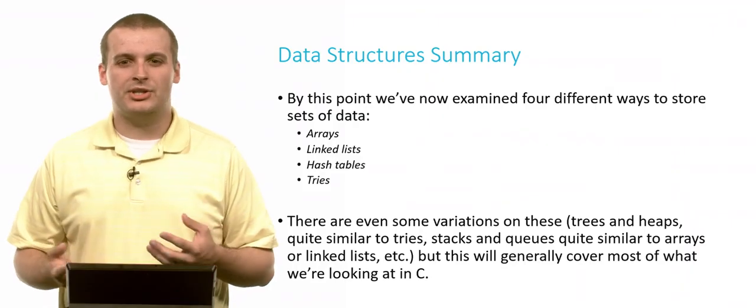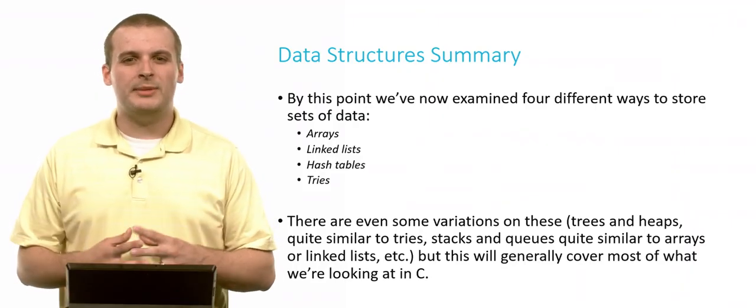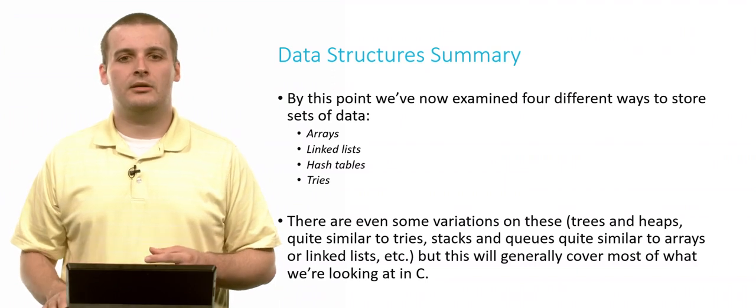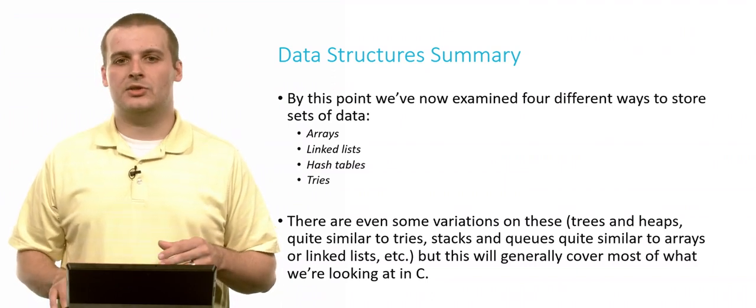So in CS50, we've covered a lot of different data structures. We've seen arrays and linked lists and hash tables and tries, stacks and queues. We'll also learn a little bit about trees and heaps. But really, all this ends up being variations on a theme. There are these four basic ideas that everything else can boil down to: arrays, linked lists, hash tables, and tries. This is pretty much going to summarize everything we're going to talk about in this class in terms of C.